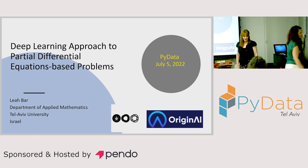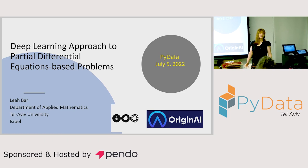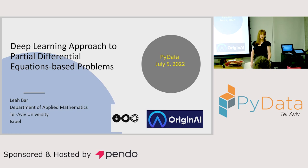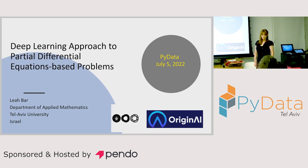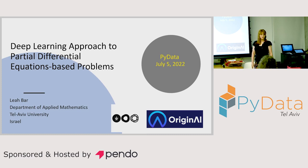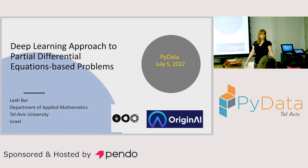Hi, nice to meet you. My name is Lea. I did my bachelor in physics and then I studied biomedical engineering. My PhD was in image processing at Tel Aviv University, and then I did a postdoc also in image processing. Now I work at a company called Origin AI, and for my hobby, I work one day a week at Tel Aviv University at the Department of Mathematics, trying to have some fun with applied math.